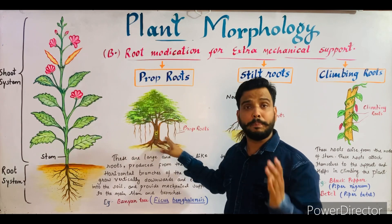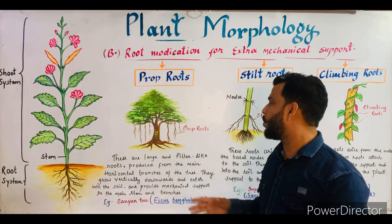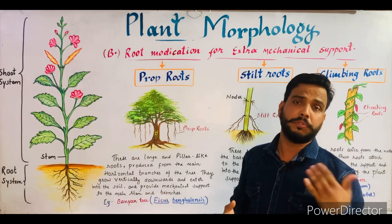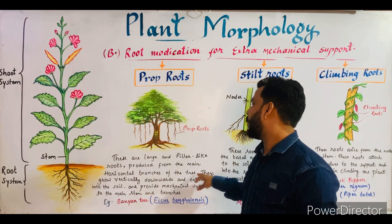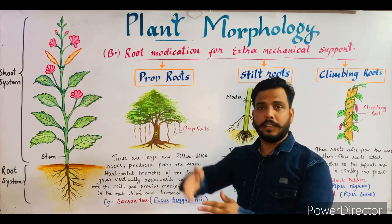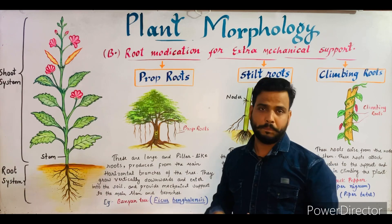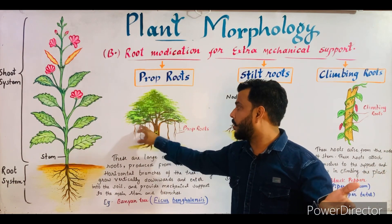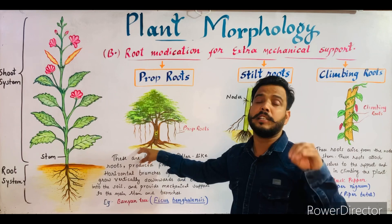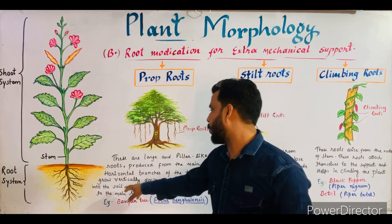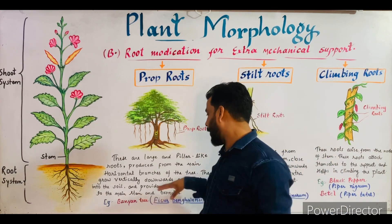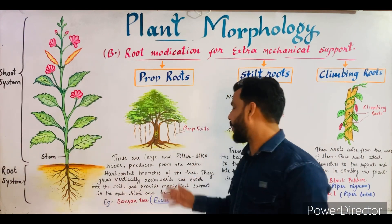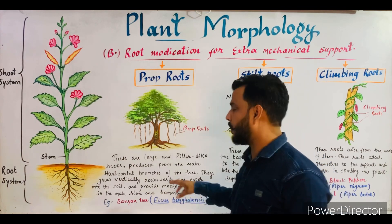These large and pillar-like roots are produced from the main horizontal branches of the plant. The prop roots arise from the main horizontal branches of the tree, grow vertically downward, and enter into the soil. The roots which develop from the horizontal branches of the tree, grow vertically downward, and enter into the soil provide extra mechanical support to the main stem and branches. These are termed as prop roots. The example is the Banyan tree, whose scientific name is Ficus bengalensis.